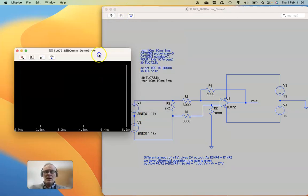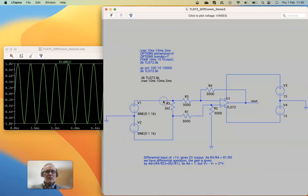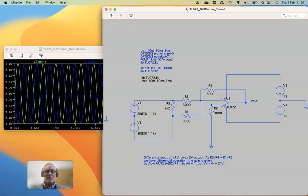So if I run this analysis, we will see this pin and this pin are now in antiphase with each other, which is fantastic. This is what we want. So this now resembles a microphone or a transformer output.